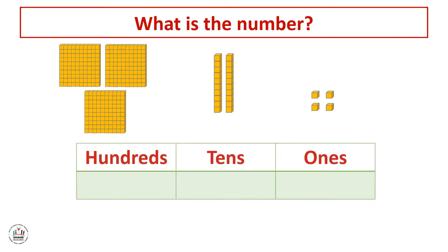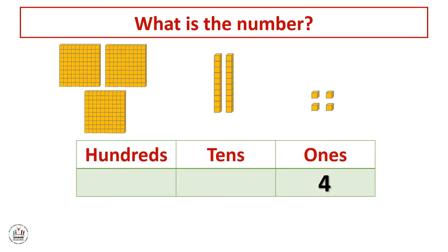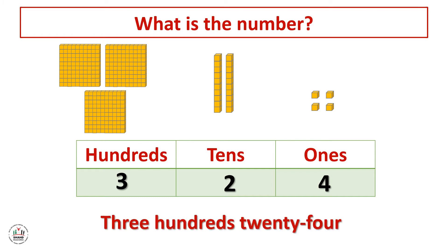Another example. Here the number of ones is 4, and the number of tens is 2, while the number of hundreds here is 3. And we read the number like this: 324. We start from the left to the right — 324.